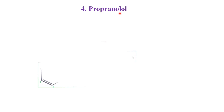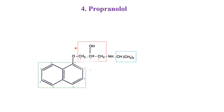Dear students, now we are going to see the synthesis of propranolol. First, we will see the structure of propranolol. It is having the parent as propanol. The hydroxy group is attached at the second position, that is why it is 2-propanol or propan-2-ol.